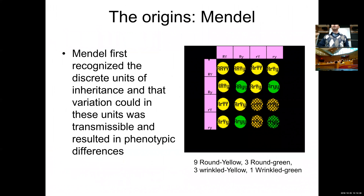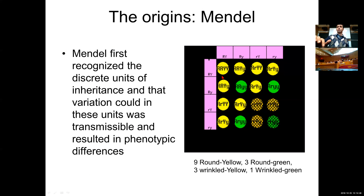How do we know all this? It all started with Mendel carrying out his experiments on the inheritance patterns of phenotypic traits. He recognized discrete units of inheritance, and that variation in these units was transmissible and resulted in phenotypic differences. He could study the phenotypic traits of the parents and ask what the phenotypic traits of the offspring would be — for example, round and yellow versus round and green as traits, with yes or no yellow and yes or no round being the two alleles for every locus.